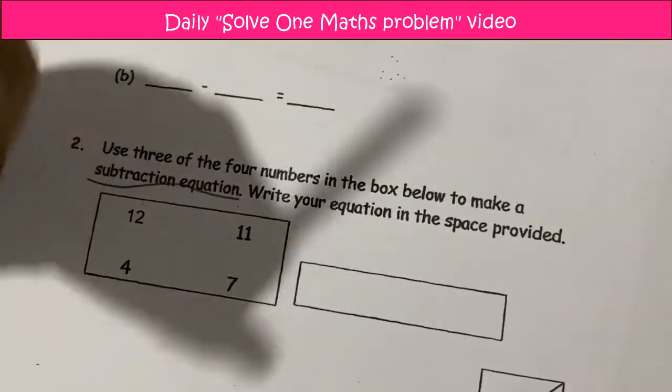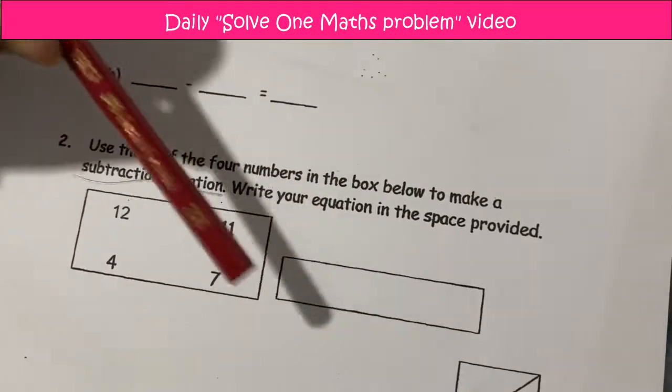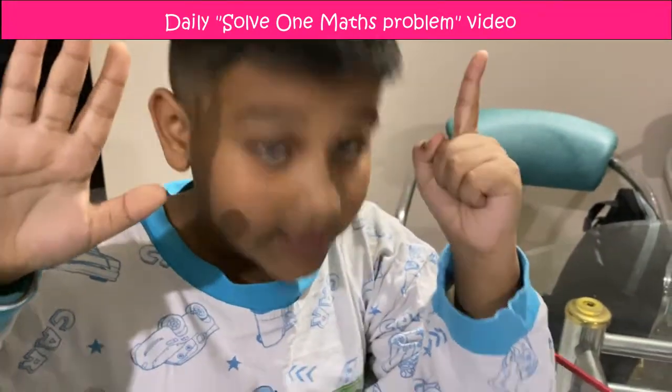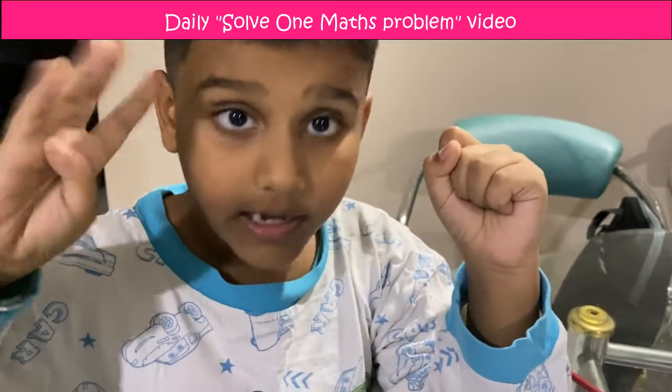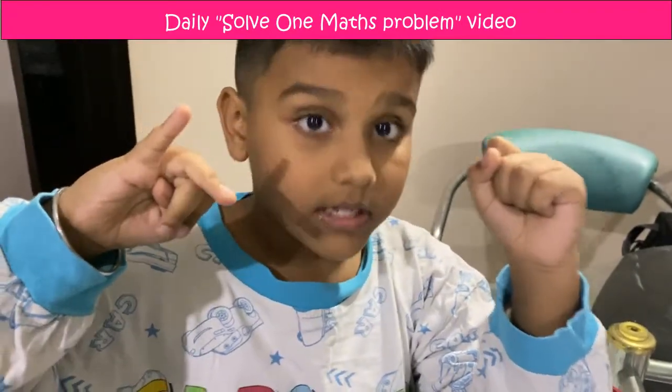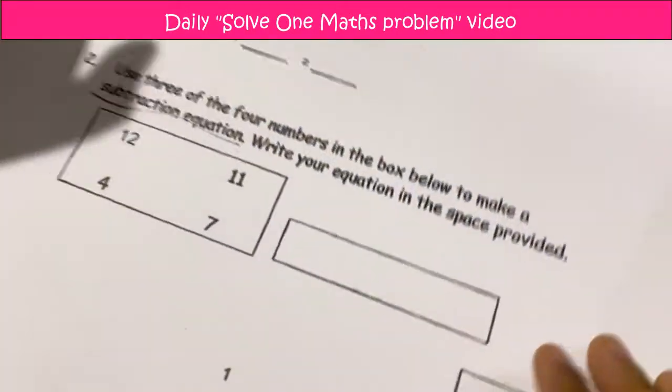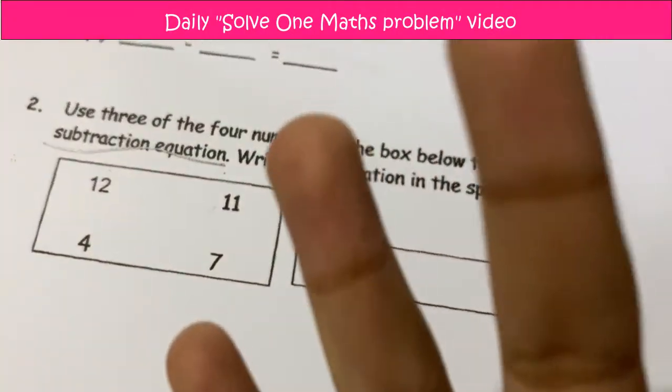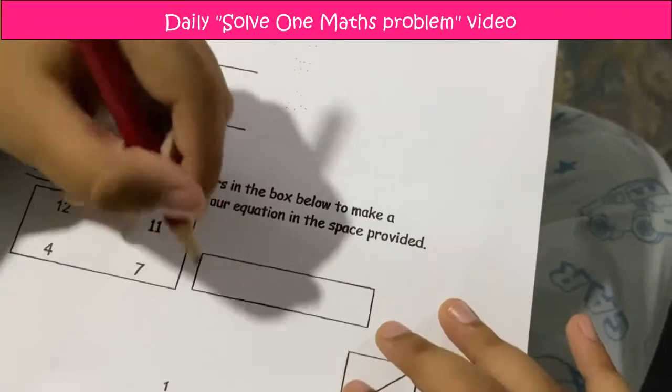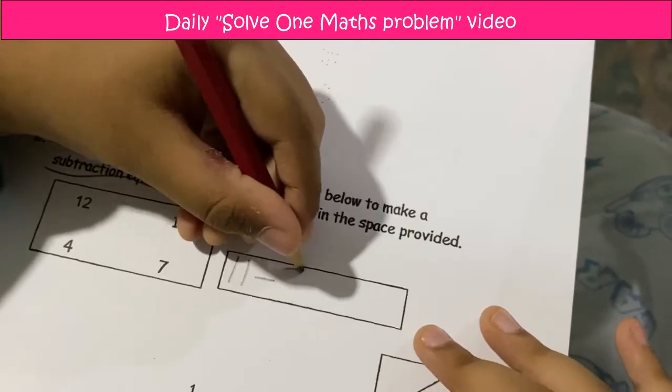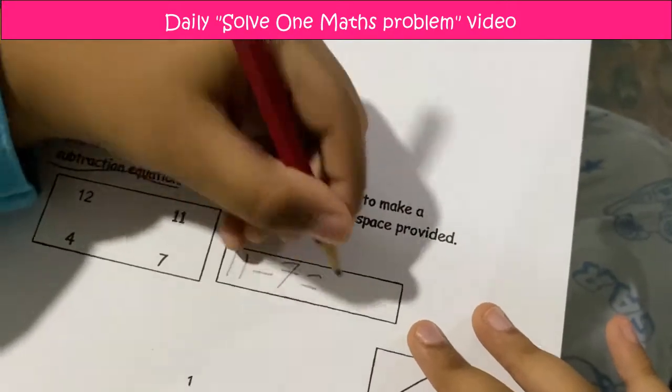Cancel this. This is not the right one. Let's try 11 minus 7. Seven fingers before 11 is 10, 9, 8, 7, 6, 5, 4. What is the answer? Yes, it's 4. So let's write down 11 minus 7 equals 4.